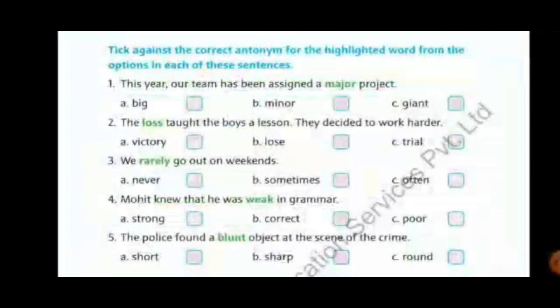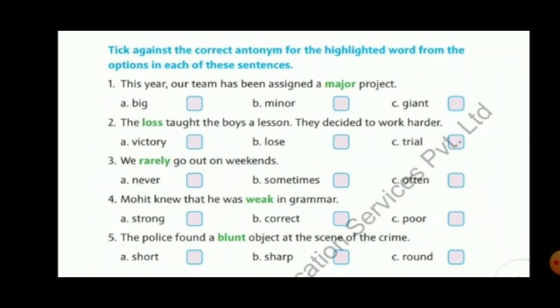The next exercise says: tick the correct antonym for the highlighted word from the options. First sentence: 'This year our team has been assigned a major project.' The highlighted word is major — the antonym of major is minor. Second sentence: 'The loss taught the boy a lesson; they decided to work harder.' The options are victory, lose, trial — the antonym of loss is victory.